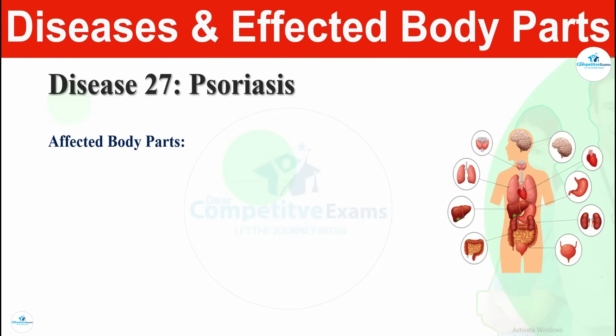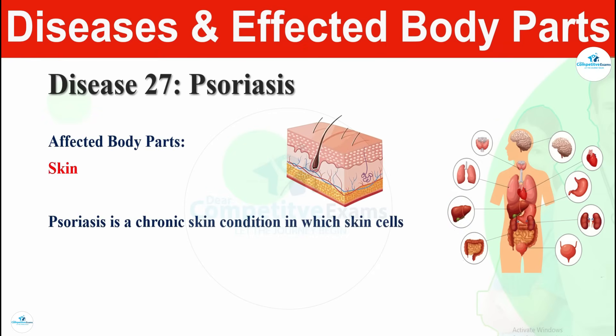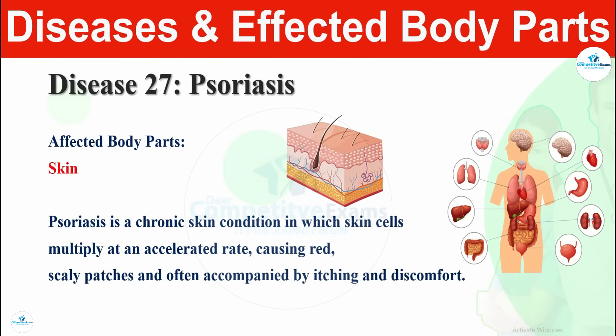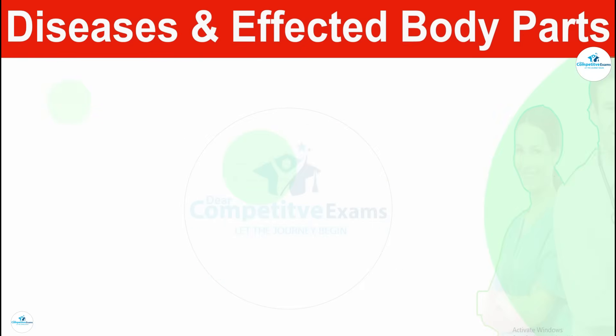Disease number twenty-seven is psoriasis. Psoriasis affects the skin. It is a chronic skin condition in which skin cells multiply at an accelerated rate, causing red, scaly patches often accompanied by itching and discomfort. Psoriasis is a disease that concerns the skin and causes red and scaly patches.